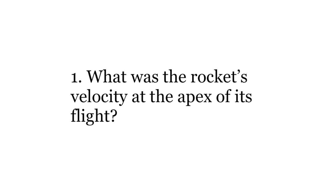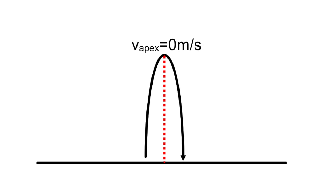Analysis question 1: What is the rocket's velocity at the apex of its flight? In one-dimensional kinematics, the velocity is 0 meters per second at the apex of flight to change the direction of the object.